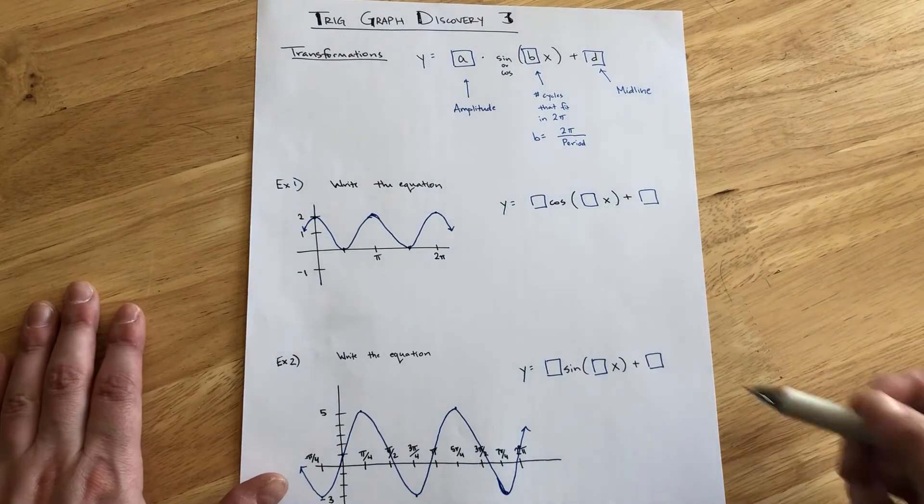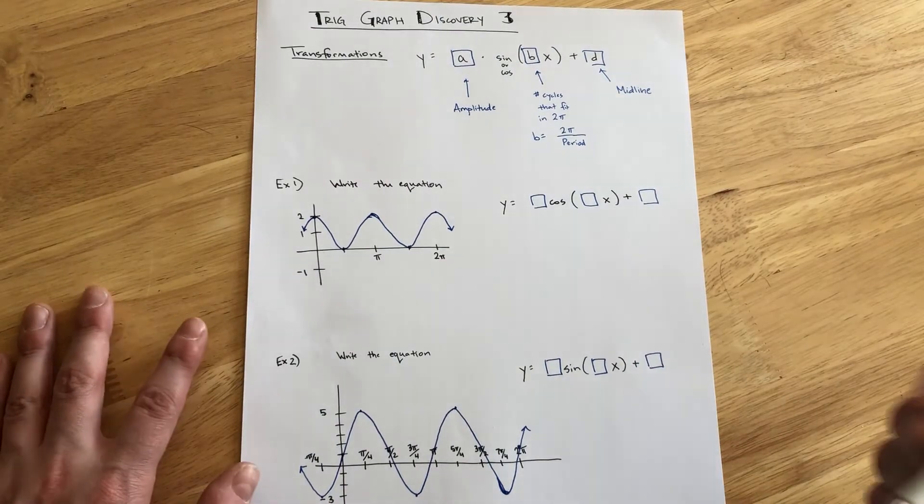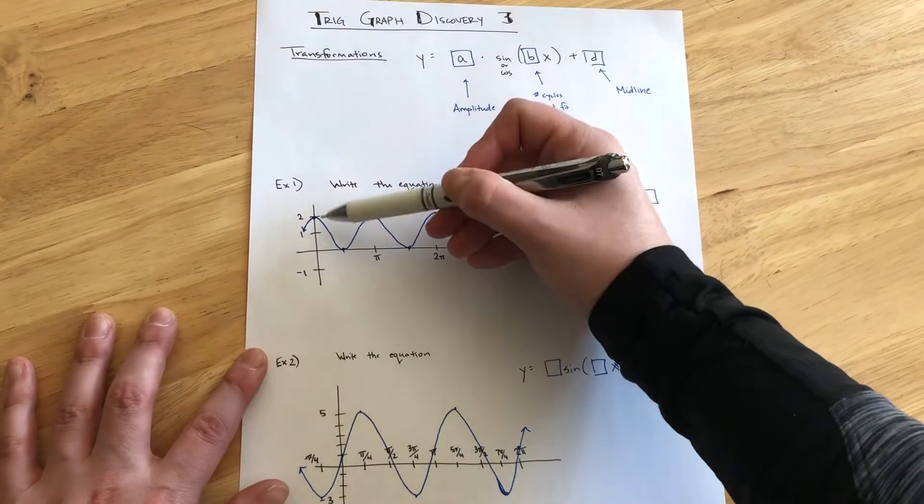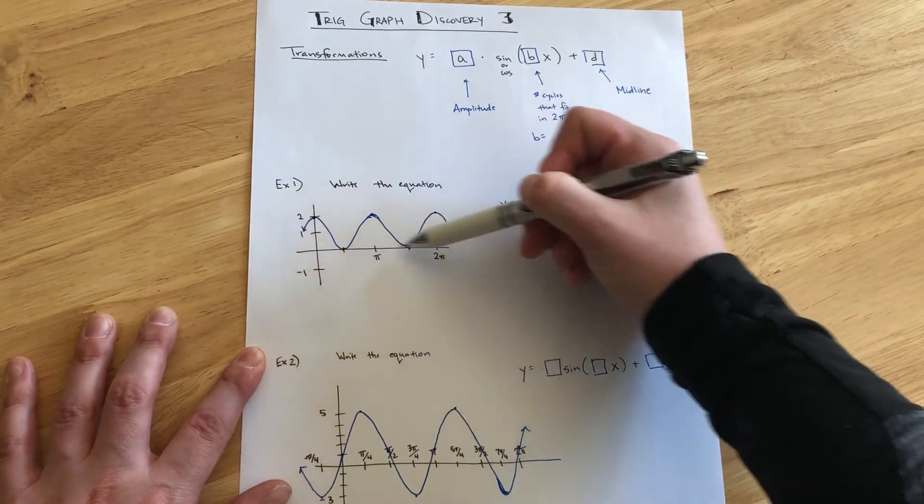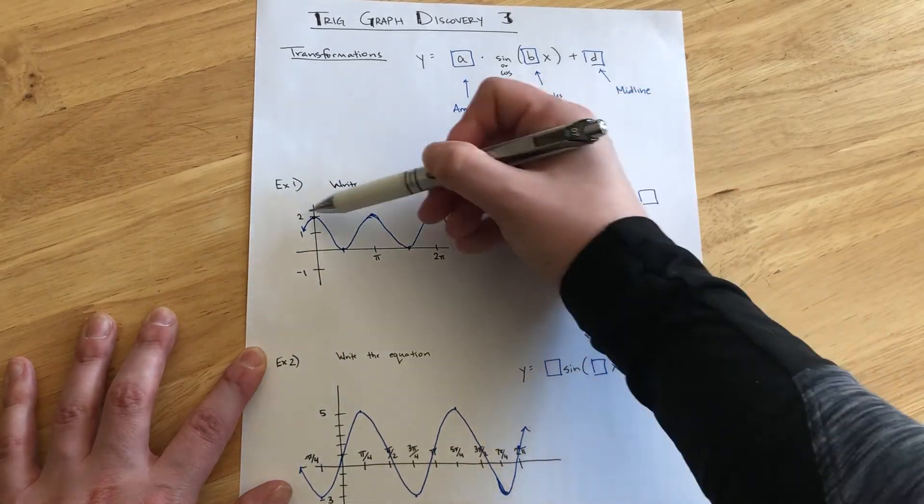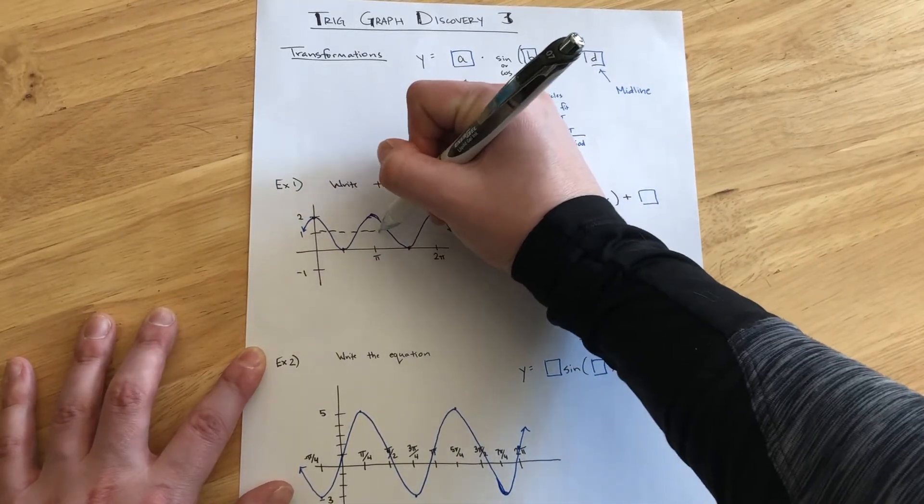Next up, let's start by finding the midline and the amplitude just like before. So, we have a lowest point of 0, a highest point of 2, and so that midline is at 1.